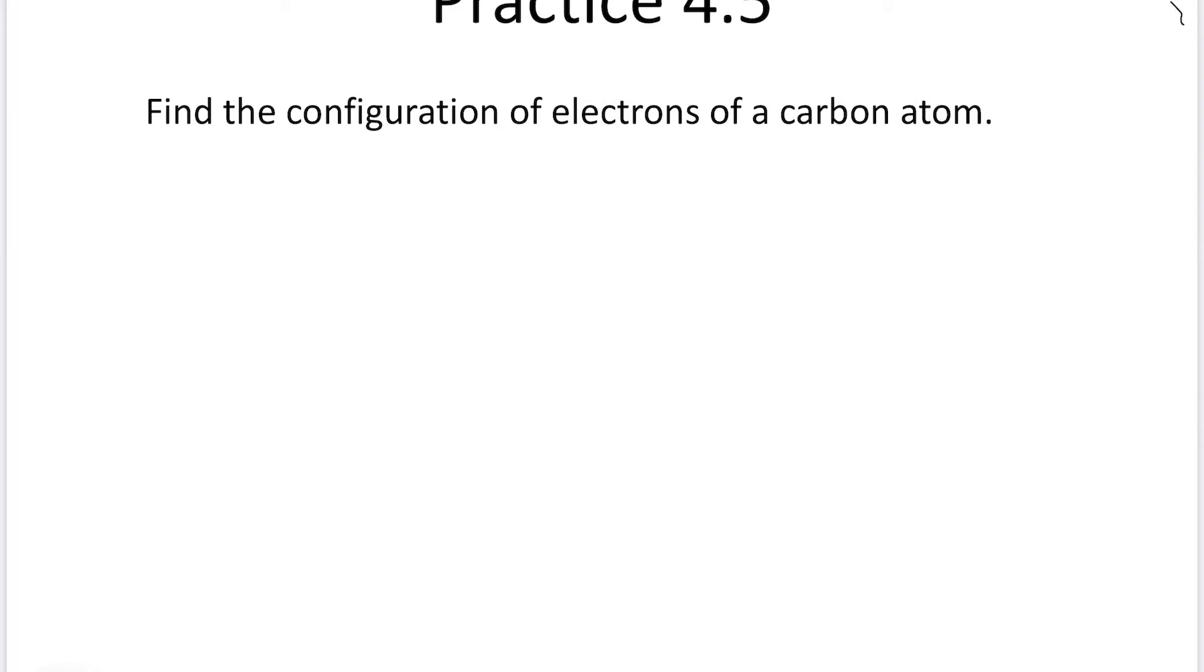In this question, find the configuration of electrons of a carbon atom. First, we need to find out how many electrons a carbon atom has. It has 6 electrons.